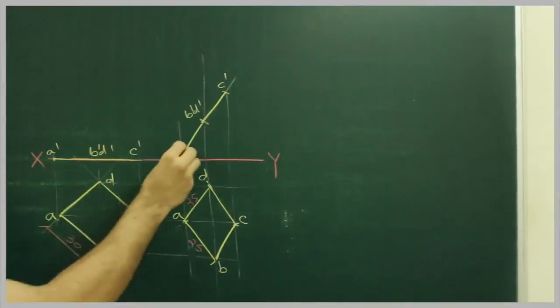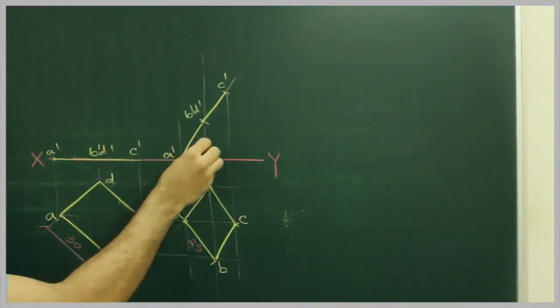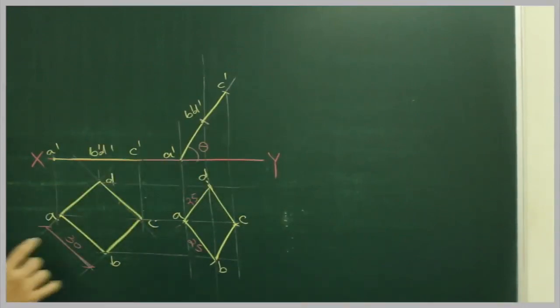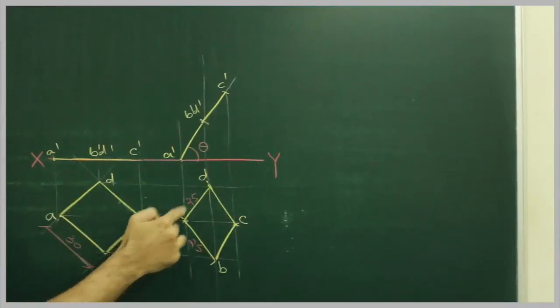And we can find out angle also. That is theta. That plane inclination with horizontal plane. So that this side which is 30, now it appears 25mm in top.